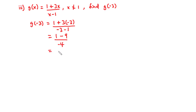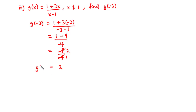1 minus 9 is negative 8 over negative 4. Negative 4 goes into negative 8 two times. So g(negative 3) equals 2.